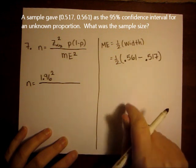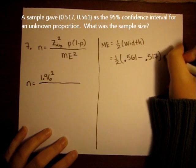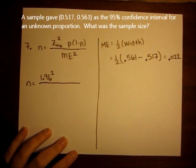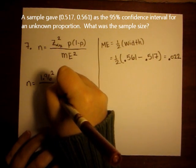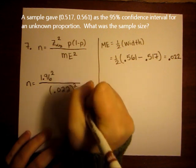So when I subtract them, I get the width, and then multiply by one half, I get 0.022 is the margin of error in this confidence interval. So on the denominator, I'm going to have 0.022 squared.